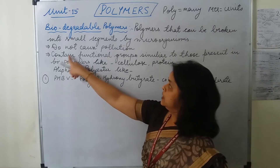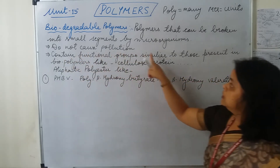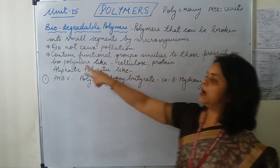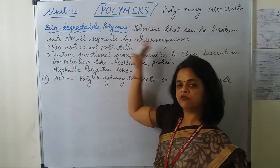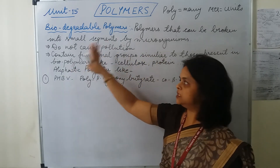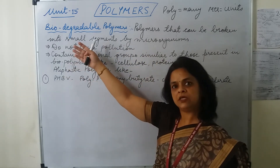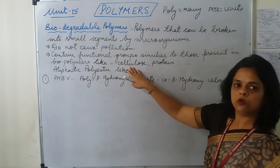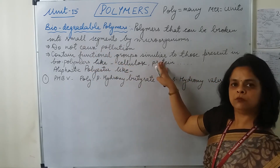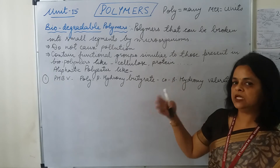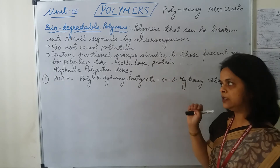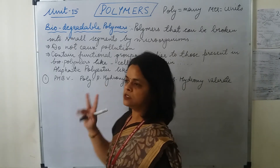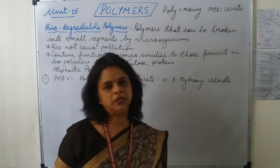Biodegradable polymers contain functional groups similar to those present in biopolymers. The functional groups which are present in biopolymers — like cellulose, proteins, polynucleotide chains such as DNA and RNA — are the same. Now we are going to discuss two biodegradable polymers.